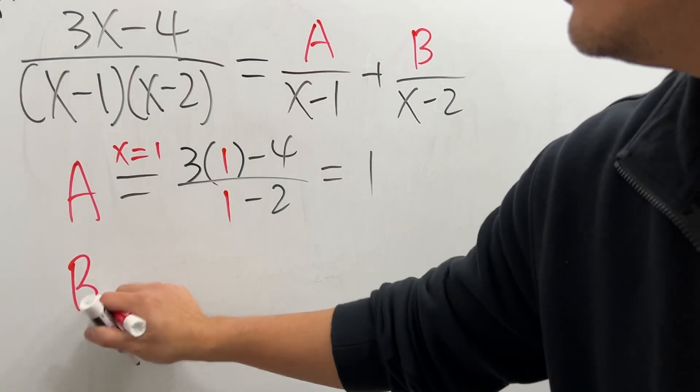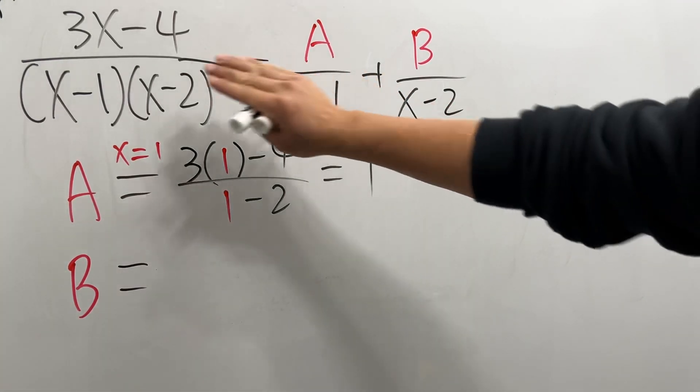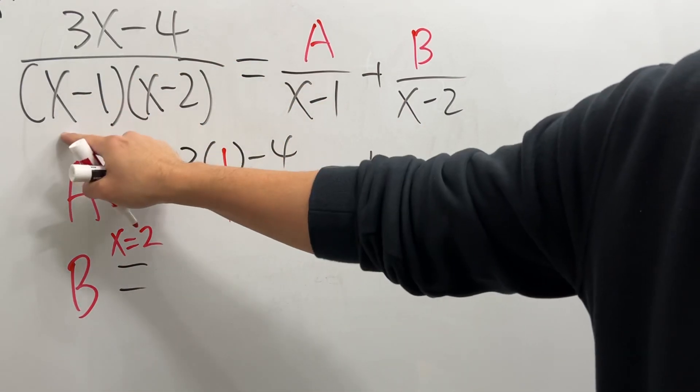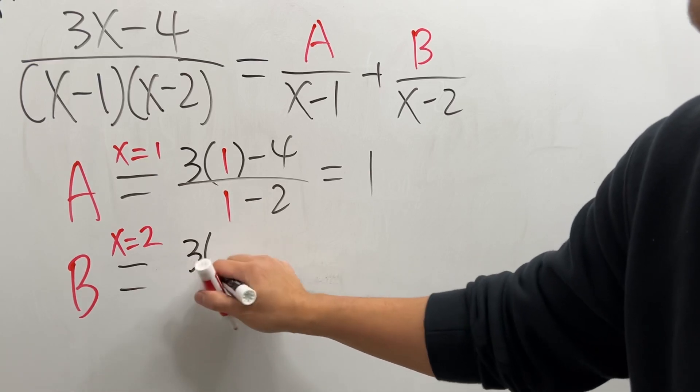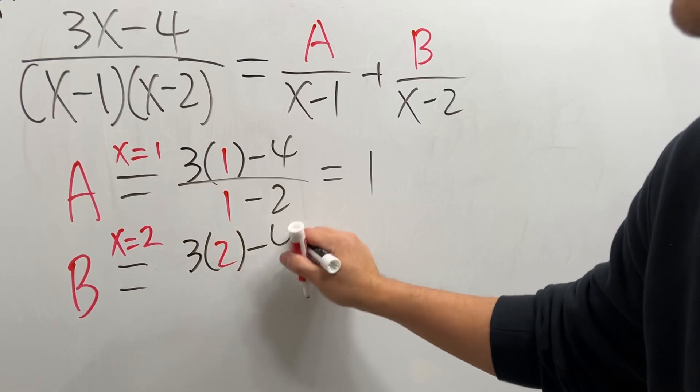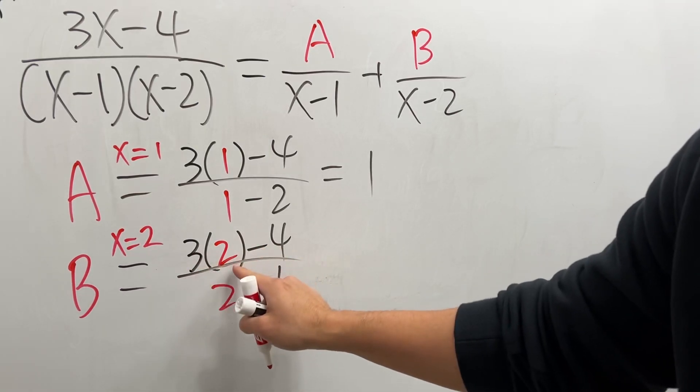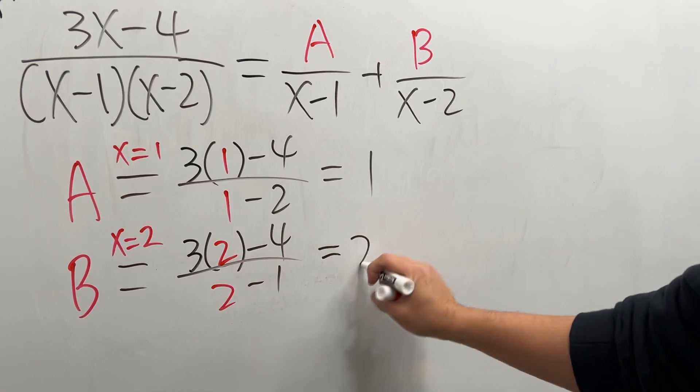Now for B, this right here, you see x minus 2, cover that up, we have to pick x is equal to 2. Put it here, put it here, so on the top we have 3 times 2 minus 4 over 2 minus 1. All right, that is 6 minus 4 is 2 over 1, so it's 2.